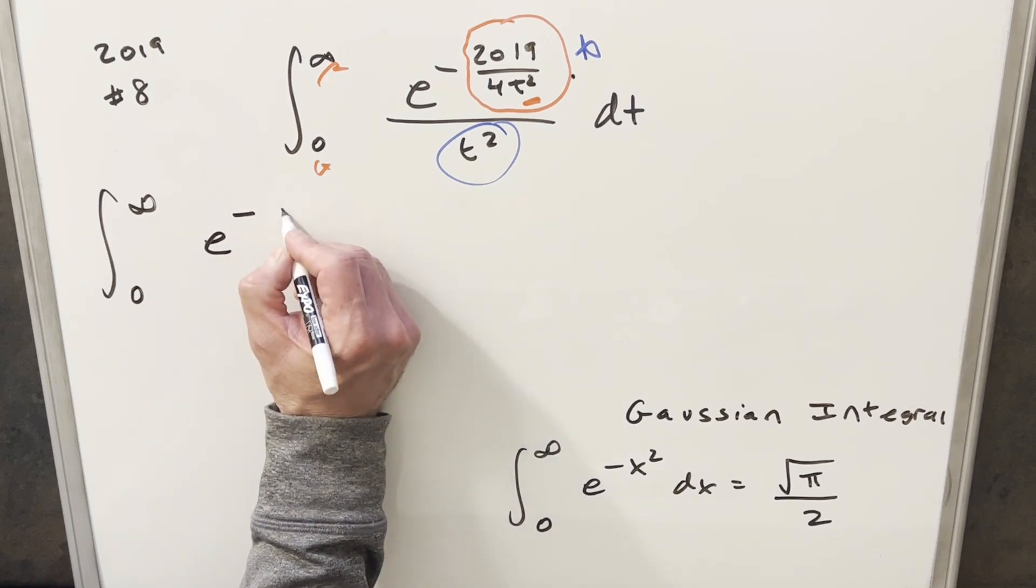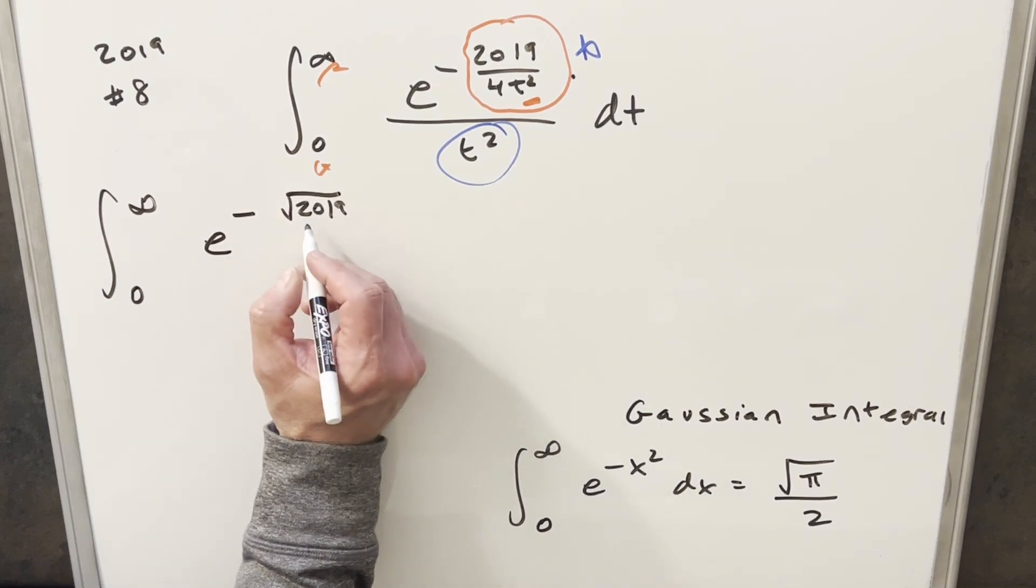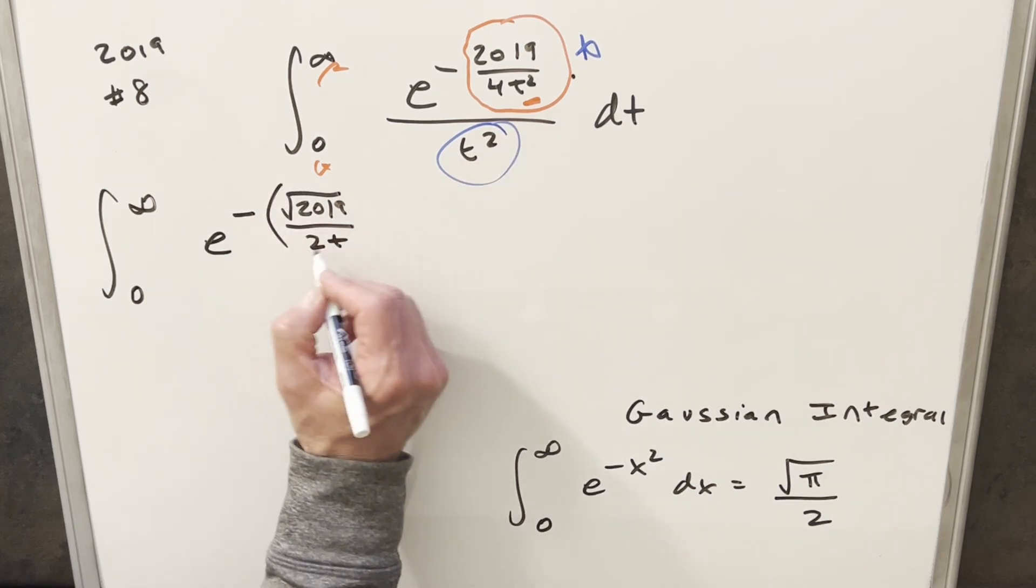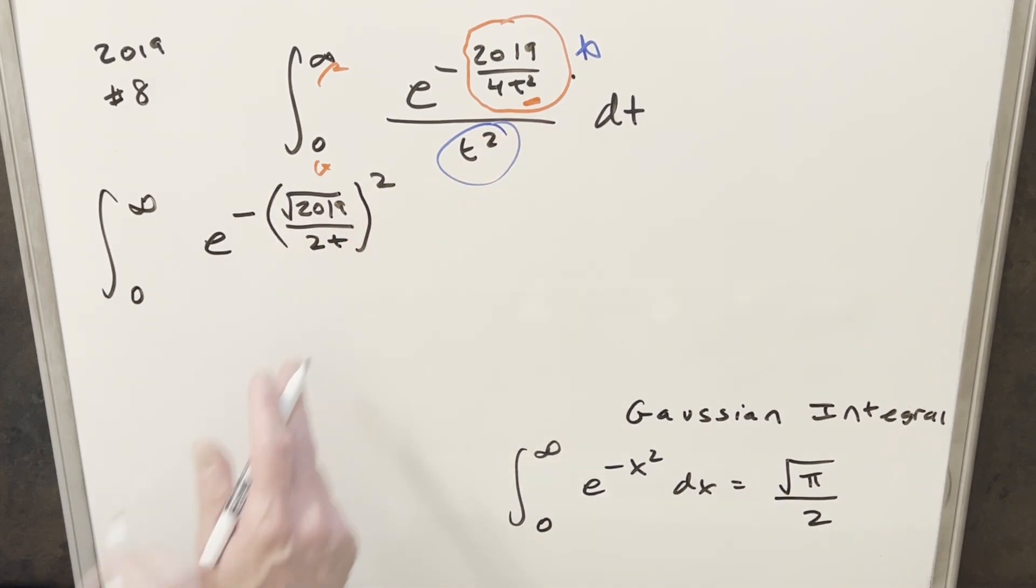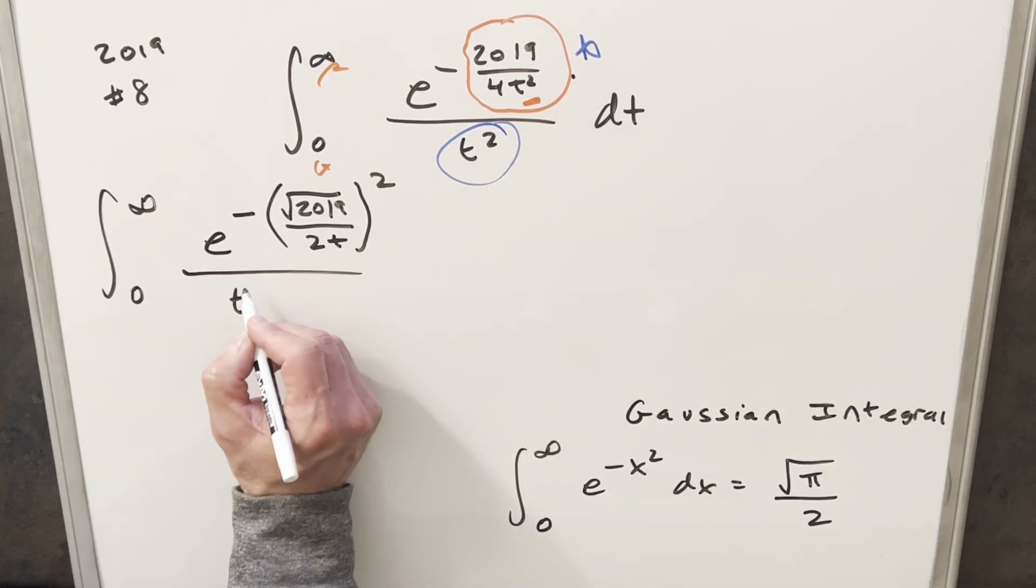So what I can do for that, I can write this as e to the minus, instead of writing 2018, I can write it as the square root of 2019. Instead of 4t squared, I can write this over 2t. And then look at all of this squared. Just noticing when you square that, you get back to this. And then this is going to be all over t squared.